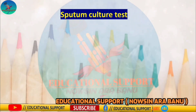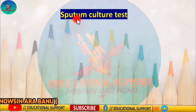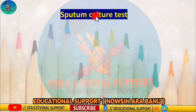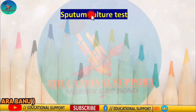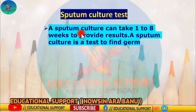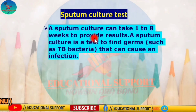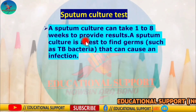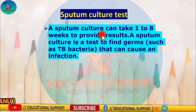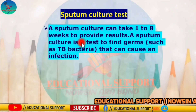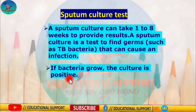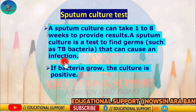Next is the sputum culture test. One of the best ways to diagnose tuberculosis is through a sputum culture test, which can take 1 to 8 weeks to provide results. A sputum sample is added to a substance that promotes the growth of bacteria. If no bacteria grow, the culture is negative; if bacteria grow, the culture is positive. If tuberculosis bacteria grow, the person has tuberculosis.